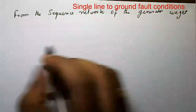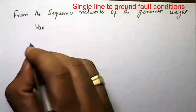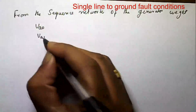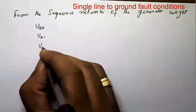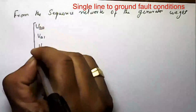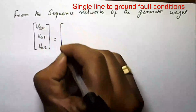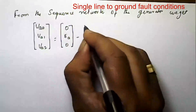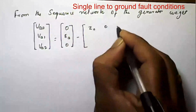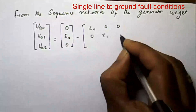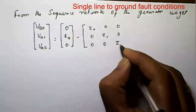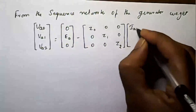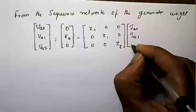Next, consider the sequence network equation of the generator. The sequence network equation, already derived in the previous video using the symmetrical components method, is: [Va0, Va1, Va2] = [0, Ea, 0] minus [Z0, 0, 0; 0, Z1, 0; 0, 0, Z2] multiplied by [Ia0, Ia1, Ia2].